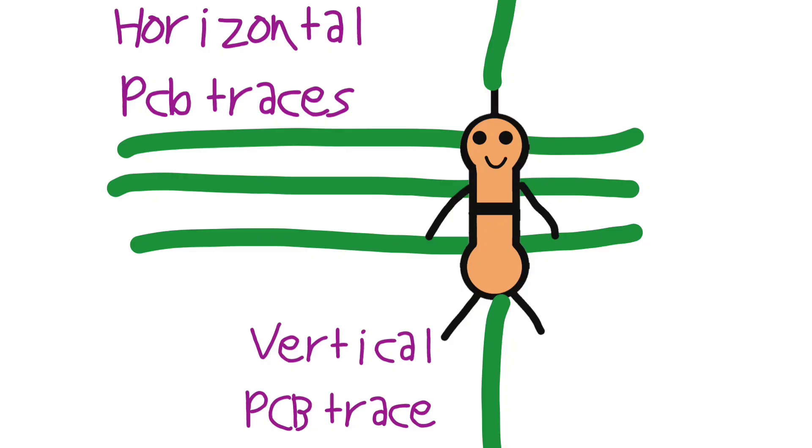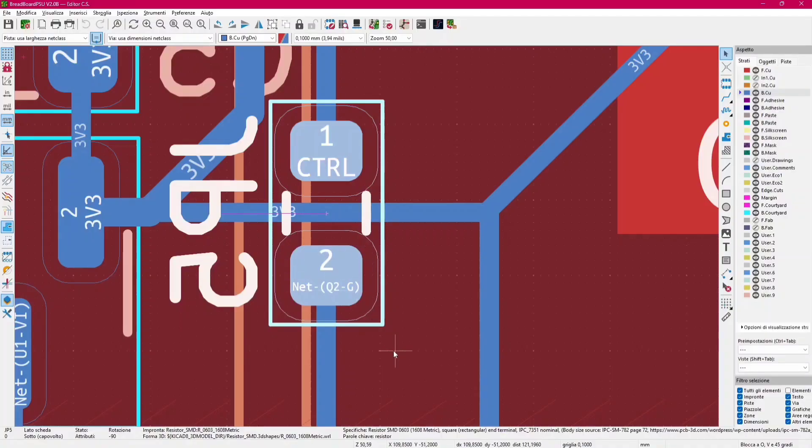The second one is strictly related to the first. We use zero ohm resistors to go over PCB traces. For example, in this layout, I had to place a zero ohm resistor to jump over a horizontal trace, so that a vertical trace could be routed.